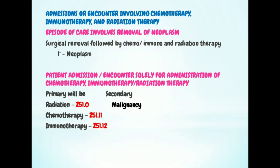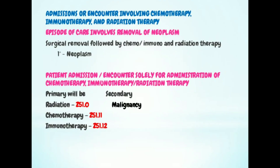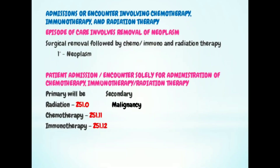Next topic: admission or encounter involving chemotherapy, radiotherapy, or immunotherapy. If the episode of care involves surgical removal of the neoplasm, the primary will be the neoplasm. If the encounter is solely for radiotherapy, the primary is Z51.0. For chemotherapy, the primary is Z51.11. For immunotherapy, the primary is Z51.12. In all these cases, the secondary is the malignancy.